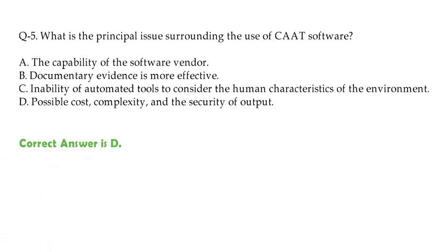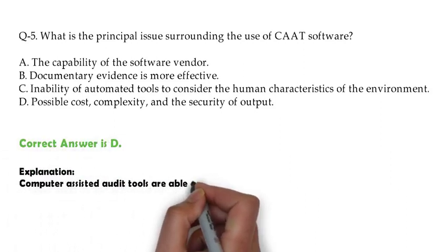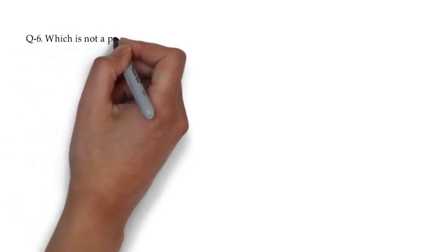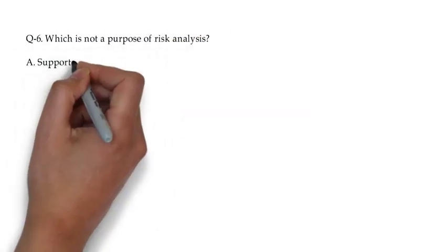The correct answer is D. Because computer-assisted audit tools are able to perform detailed technical tasks faster than humans and produce more accurate data during particular functions, such as system scanning. Cost, training and security of output are major considerations.